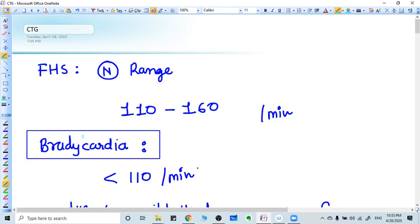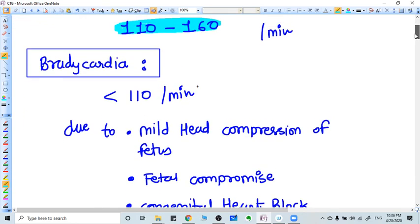First of all we start with the fetal heart sound. It is called FHS. What is FHS? FHS is a fetal heart sound. We say FHS means we take the fetal heart sound per minute. So it is a rate, beats per minute. What is the normal range of FHS? The normal range is 110 to 160. You need to remember this thing: 110 to 160 is the range per minute, normal range.